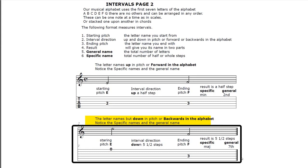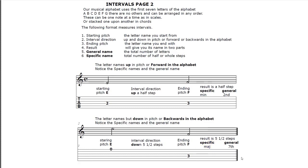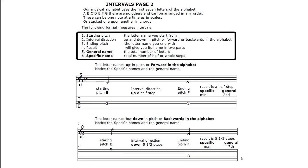Now the letter names going down in pitch or backward through the alphabet - notice the specific and general names again. Our starting pitch is E, open first string, and the interval direction is down five and one half steps. The ending pitch is F once again, but now it's the third fret fourth string, and the result is five and a half steps. So the general name is seven because when you go backwards through the alphabet - E, D, C, B, A, G, F - you get seven letter names. Its specific name is major, so E down to F is a major seventh.